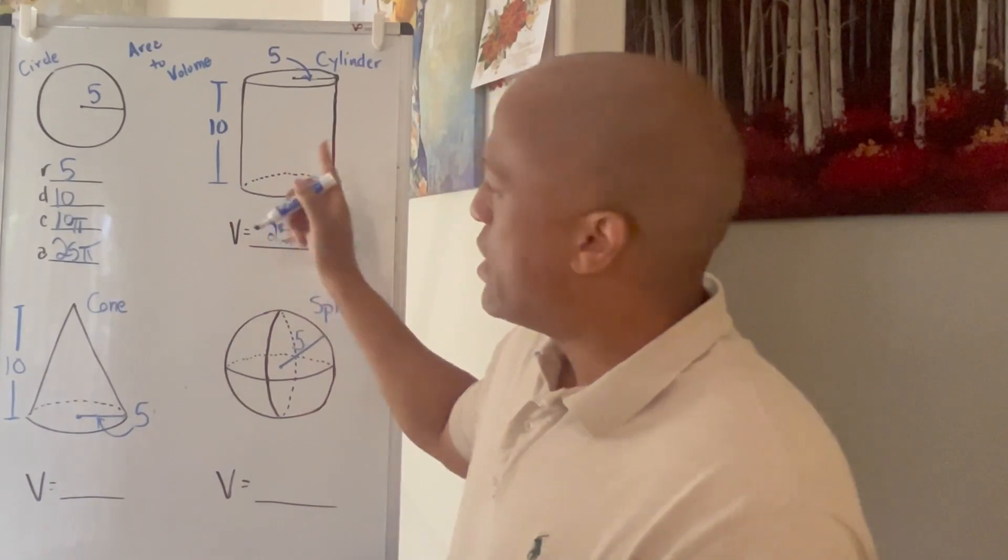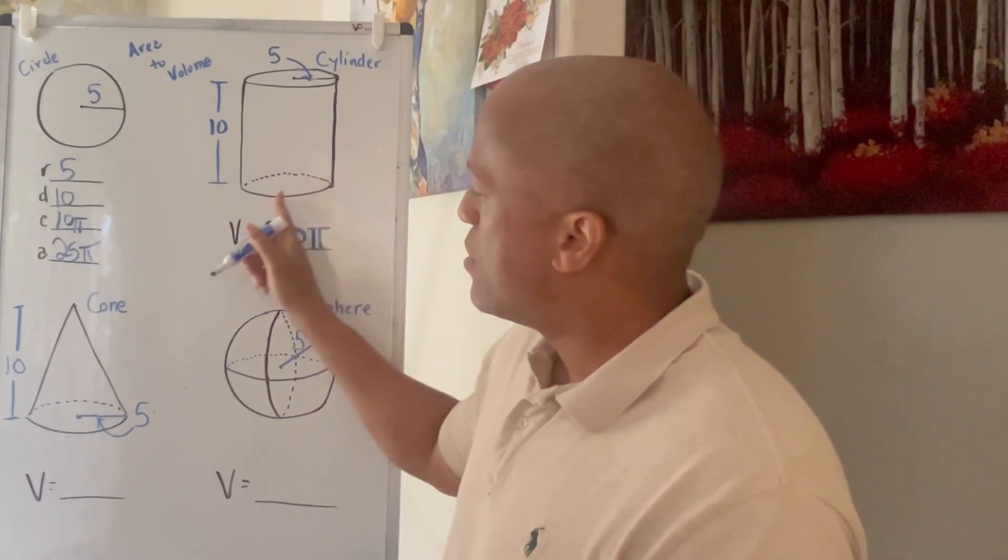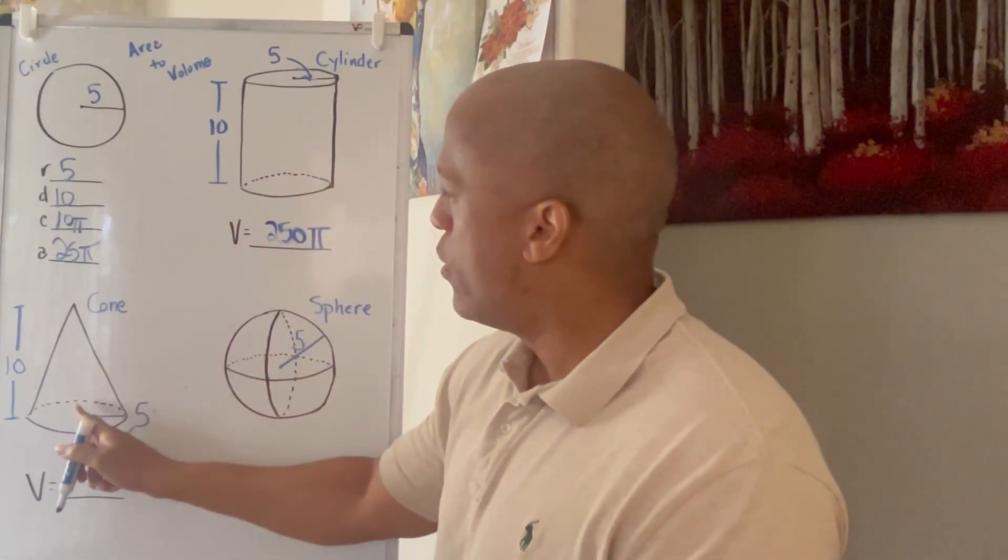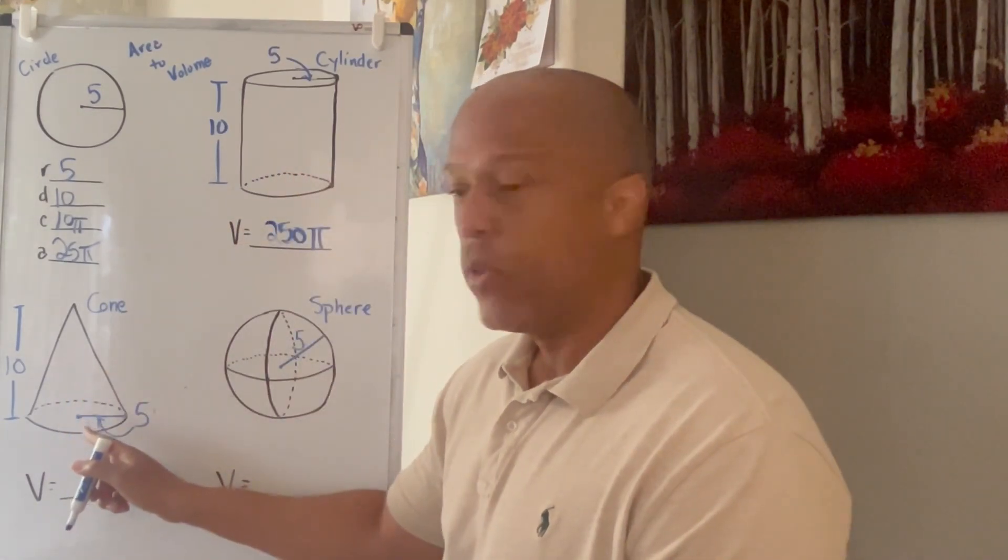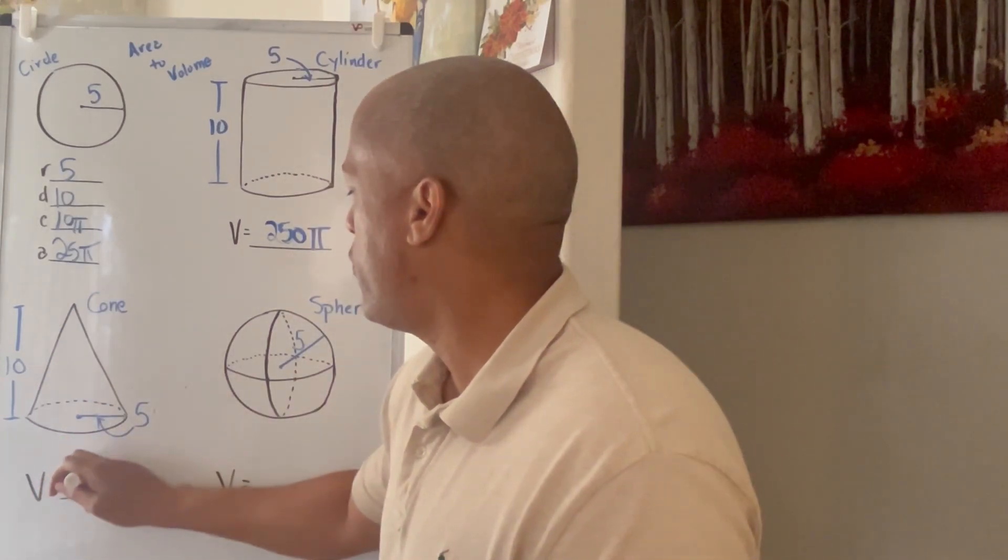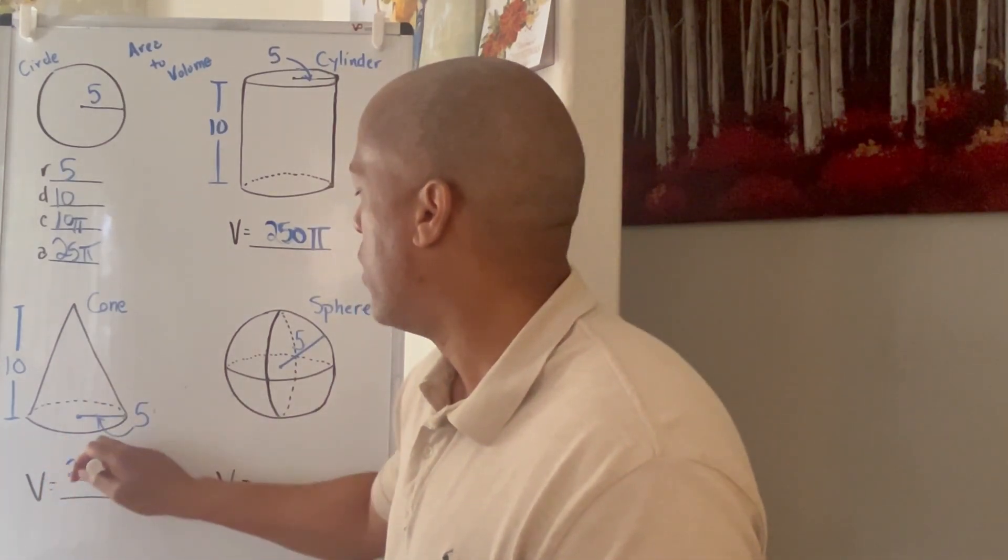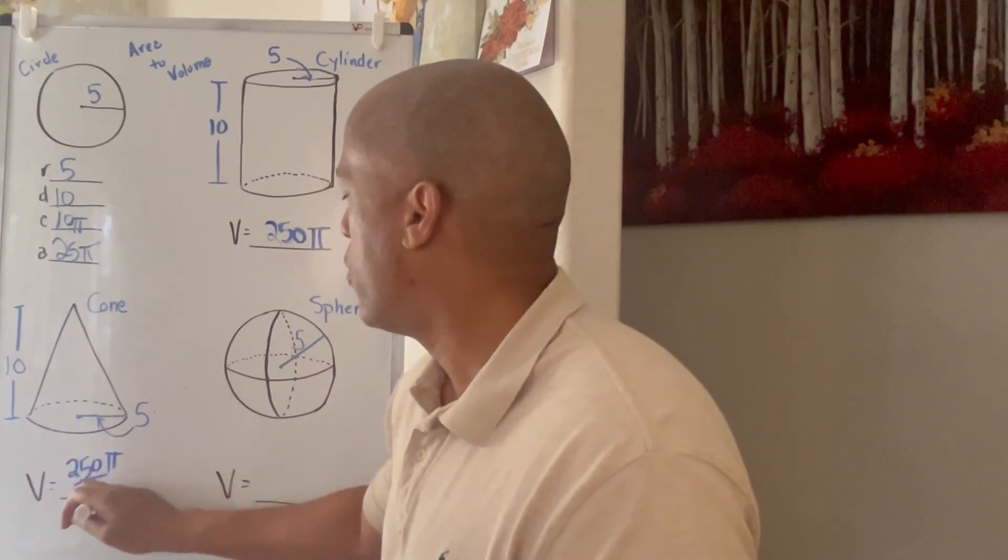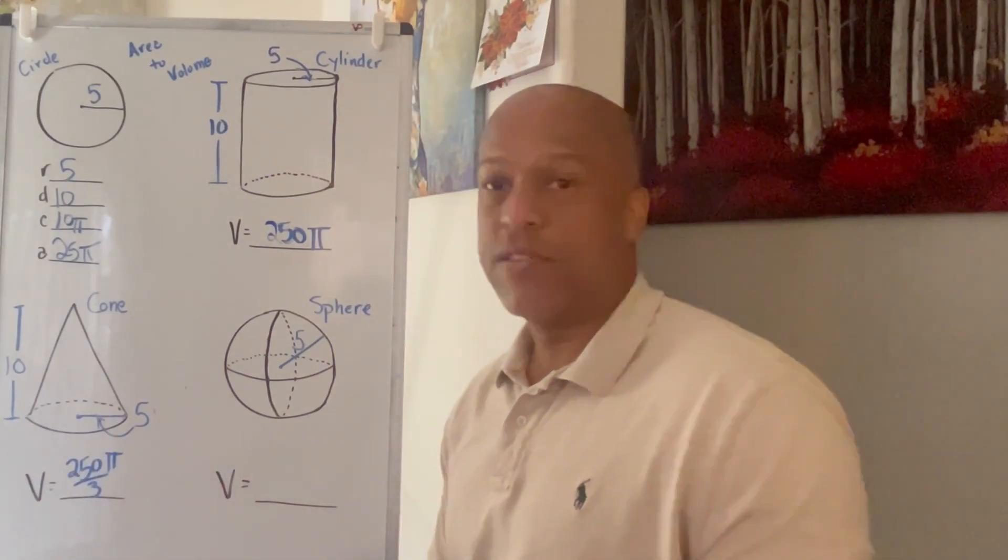So if there's three of those that will fit inside of there, that means that this is about one third of the actual volume. Which means we can just divide it by three. So the volume there would be 250 pi divided by three. And there we have it. That's the volume of the cone.